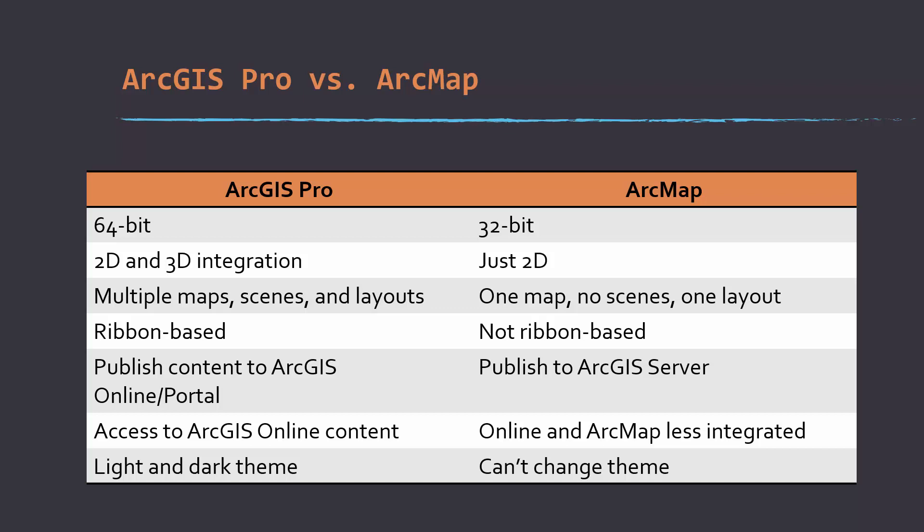With ArcMap you really only could work in a 2D environment and you used ArcScene to work in a 3D environment. ArcPro has essentially integrated those two interfaces, ArcMap and ArcScene. Within ArcGIS Pro you can have multiple map scenes and layouts. In contrast, in ArcMap you could only have one map, there was no support for scenes, and you could only have one layout in production.